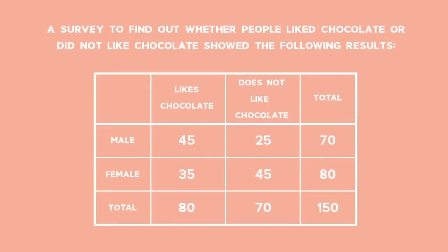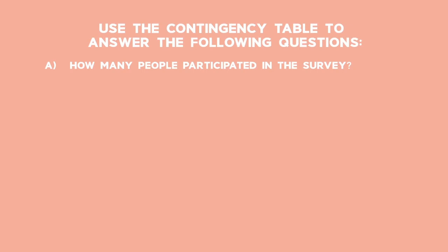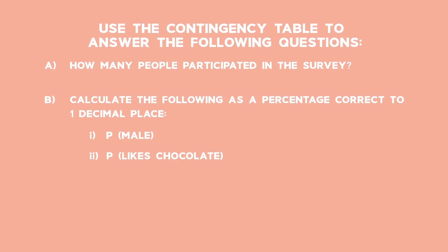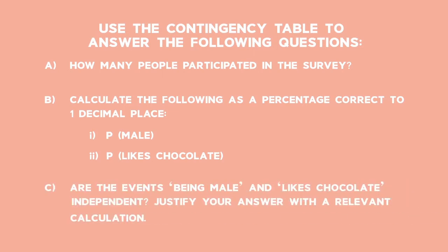Example 1 – Contingency tables. A survey to find out whether people liked chocolate or did not like chocolate showed the following results. We must use the contingency table to answer the following questions: a) How many people participated in the survey? b) Calculate the following as a percentage correct to one decimal place: 1) The probability that if we randomly select one of the people surveyed it will be a male. 2) The probability that if we randomly select one of the people surveyed, that person likes chocolate. c) Are the events being male and likes chocolate independent? Justify your answer with a relevant calculation.